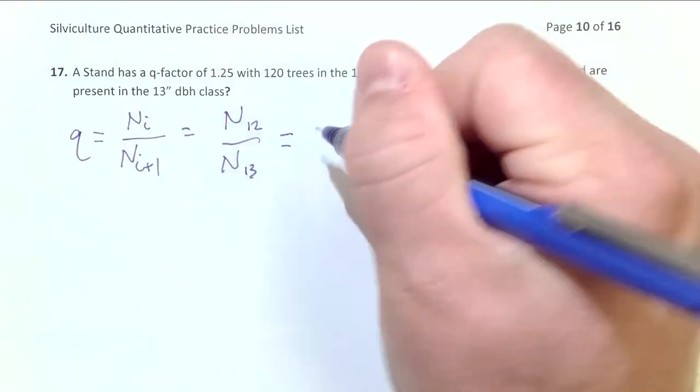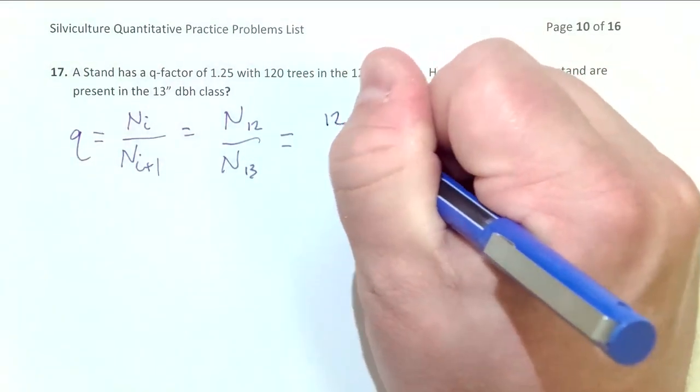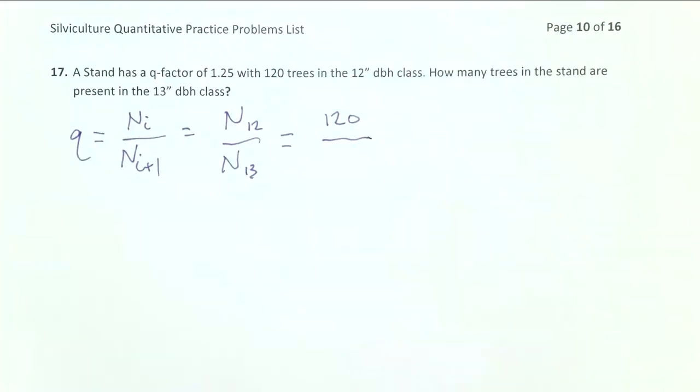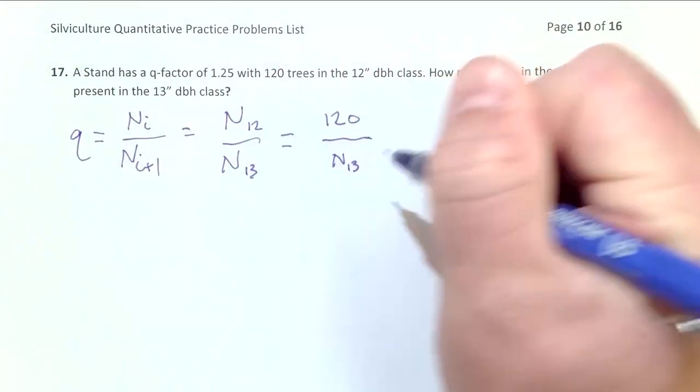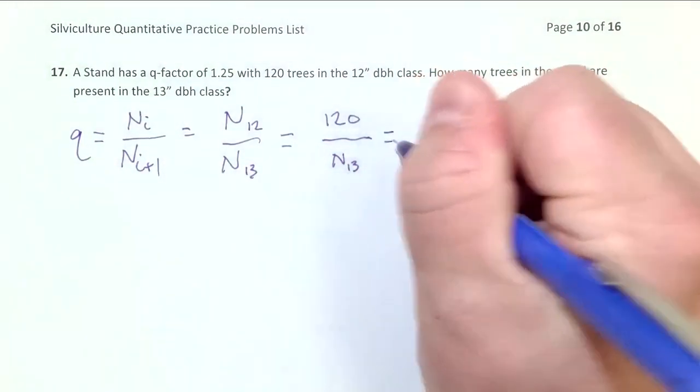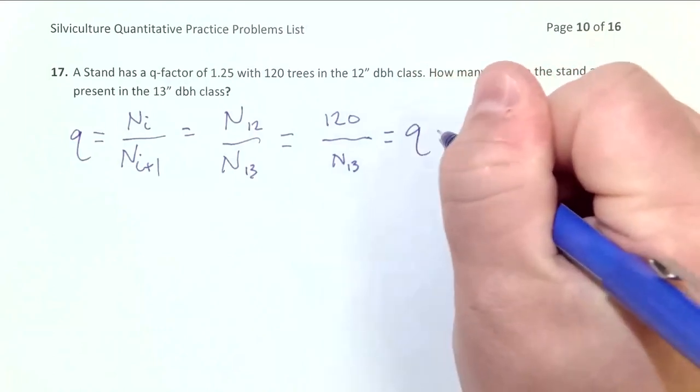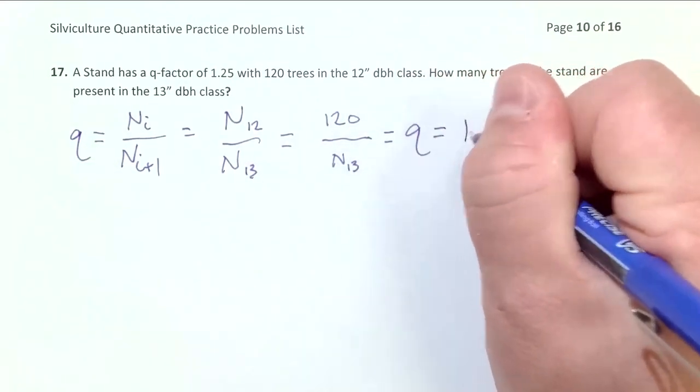What we know already is that there are 120 trees in the 12-inch size class. We don't know how many trees are in the 13-inch size class - that's what we want to know. And we know that Q equals 1.25.